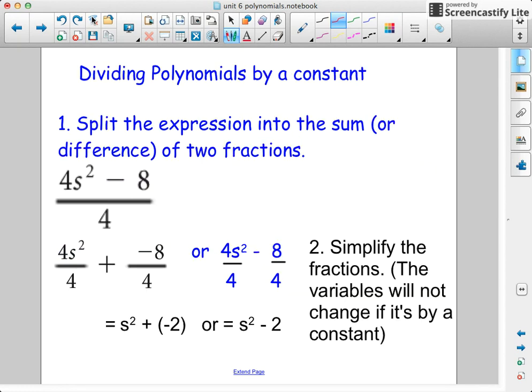Dividing polynomials by a constant. If we're dividing by just a number, we can actually split the expression into the sum or difference of two fractions. This one I would make into this right here. So it's like dividing by 4 on every term. So 4s squared divided by 4 minus 8 divided by 4. And then I would simplify. So 4 divided by 4 is just 1.